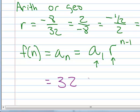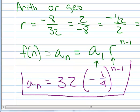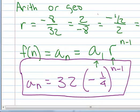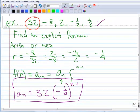So 32 times negative 1 quarter to the n minus 1. So there's my explicit formula, which is for geometric sequence to represent this particular sequence. And that's the end of this lesson.